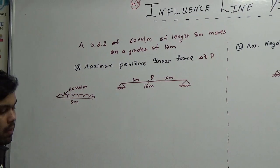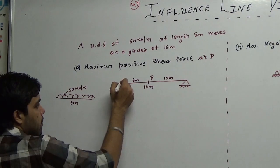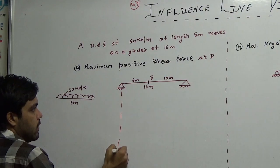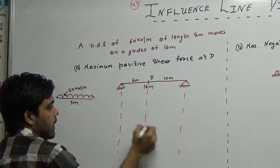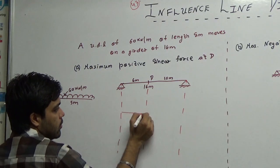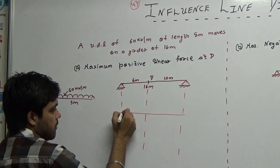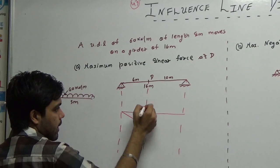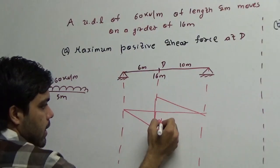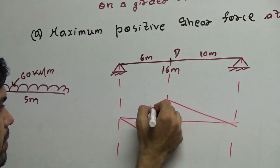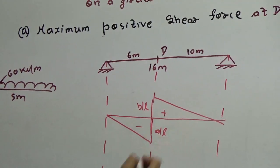To find the maximum positive shear force, recall from previous lectures that the influence line diagram for shear force at D has a negative portion on the left (A/L) and a positive portion on the right (B/L).